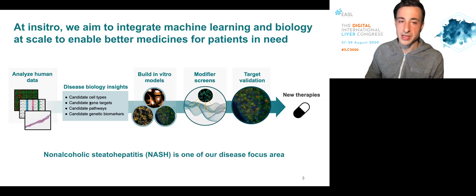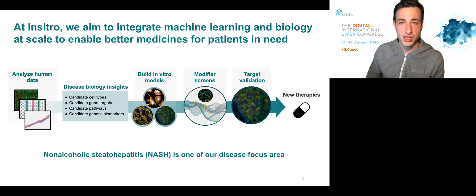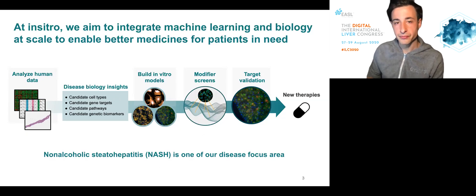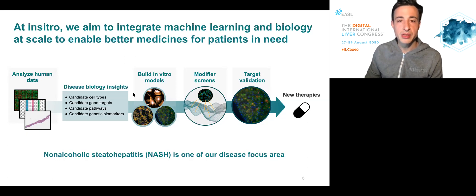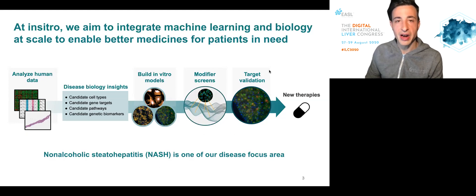For example, we can learn about candidate cell types, gene targets, pathways, and genetic biomarkers implicated with a disease. We then leverage these insights to build in vitro models of human disease, which we in turn use for target identification using modified screens and target validation.